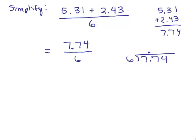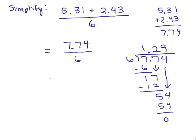6 into 7.74. We'll put the decimal point up here. 6 goes into 7 once, then we subtract and bring down the next digit. 6 goes into 17 twice, so we put a 2 up here. 2 times 6 is 12, subtract, then bring down the next digit. 6 goes into 54 nine times and it comes out exact. So the answer is 1.29.